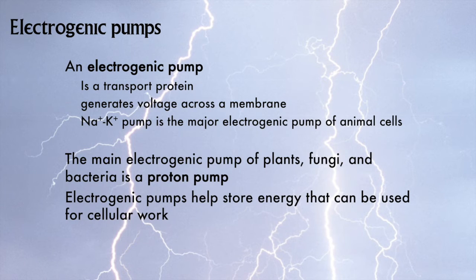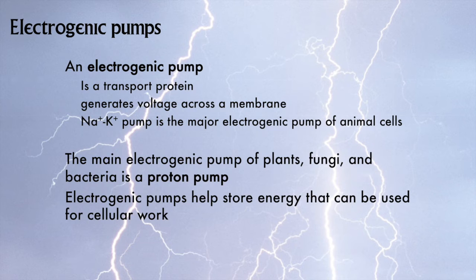Cells use ATP as an energy source, but cells also produce electricity — not in an exploitable way unfortunately, but in much the same way as a smartphone or a laptop. That is what the sodium-potassium pump is for animal cells, while other organisms use a different electrogenic pump: the proton pump. We'll also see how a proton pump can be used to make ATP in chapters 9 and 10.